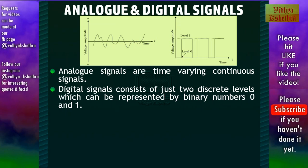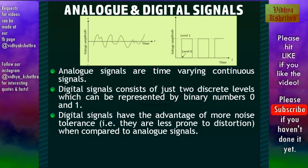In the case of a digital signal, as we can observe, there are just two levels: level 0 and level 1. Both these levels can be represented by the binary numbers 0 and 1. Digital signals have the advantage of more noise tolerance — they are less prone to distortion when compared to analog signals.